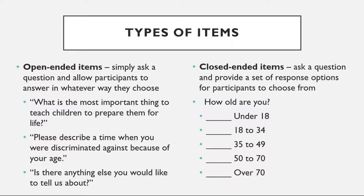Open-ended items are useful when researchers don't know how participants might respond, or when they want to avoid influencing their responses. They are more qualitative in nature and tend to be used when researchers have more vaguely defined research questions, often in early stages of a project. They're relatively easy to write, but they take more time for participants to complete and are more difficult for researchers to analyze, as answers must be transcribed, coded, and submitted to qualitative analysis such as content analysis. Respondents are also more likely to skip open-ended items because they take longer to answer. It's best to use them when the answer is uncertain or for quantities that can be converted to categories later.